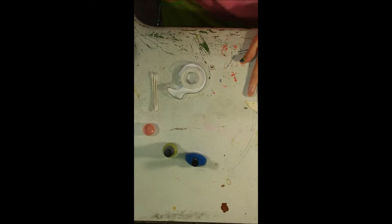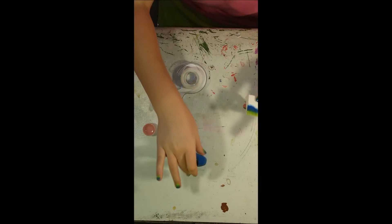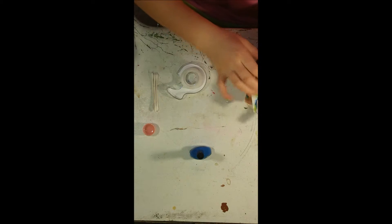Once your base coat is dry, take your makeup sponge and put on the colors that you have chosen.